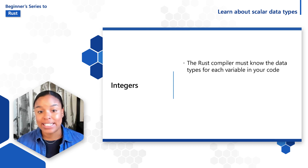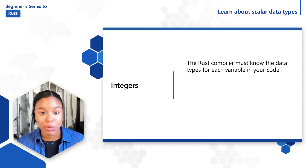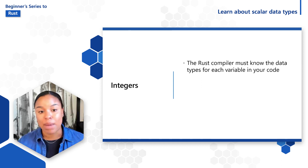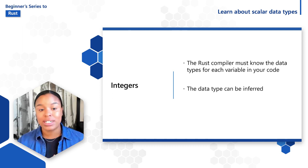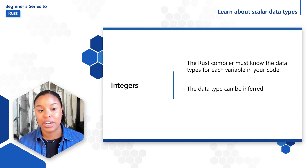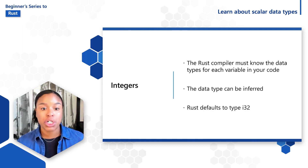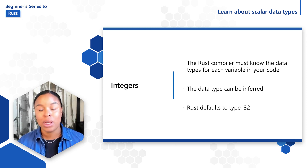Rust is a statically typed language, which means the compiler must know exactly the data type for each variable in your code. In most cases, the compiler can infer the type of some value and you don't need to tell it explicitly. If you're unsure of which integer type to use, Rust defaults to the i32 type, which is generally the fastest.